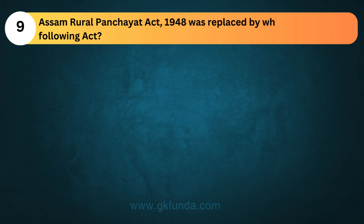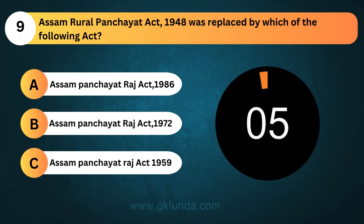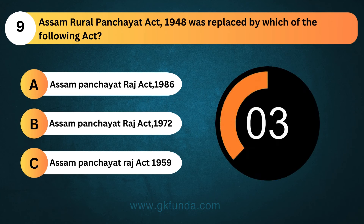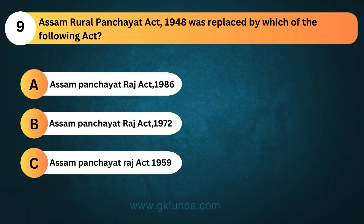The Assam Rural Panchayat Act, 1948, was replaced by which of the following acts? The answer is option C, the Assam Panchayat Raj Act, 1959.